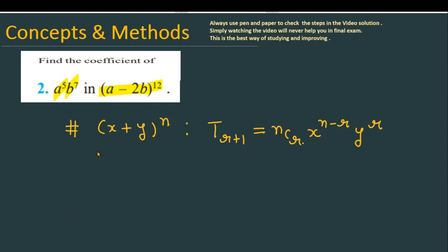Now, the data in our question is different. We have (a minus 2b) total raised to the power 12. For this expression, the general term T(r+1) uses the value 12Cr, since n is replaced by 12.